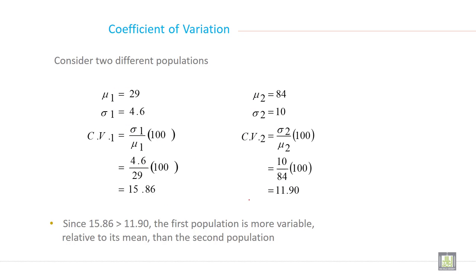This is one example for understanding coefficient of variation. Consider two different populations. This is one population and this is the second population.